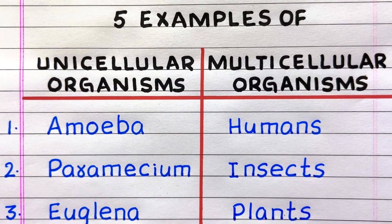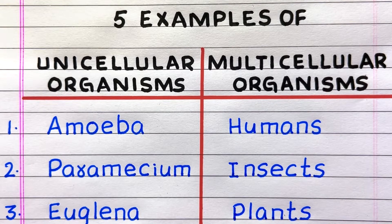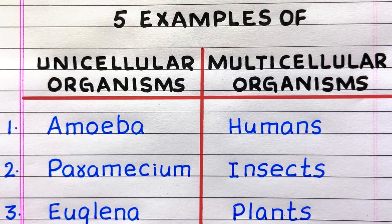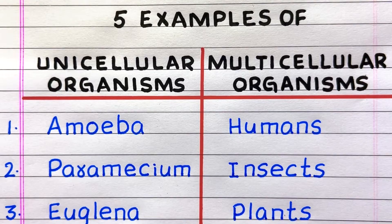First example of a unicellular organism is amoeba, second paramecium, third euglena. First example of a multicellular organism is humans, second insects, third plants.